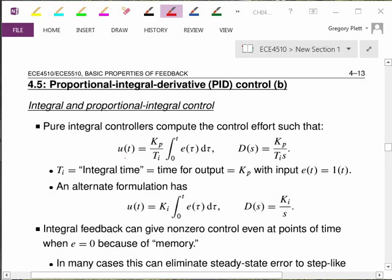We're going to look now at the other two types of control action in a PID controller. First, we look at integral control and a variation of that, which is adding the proportional and the integral control together, which is called, surprisingly, proportional integral control.